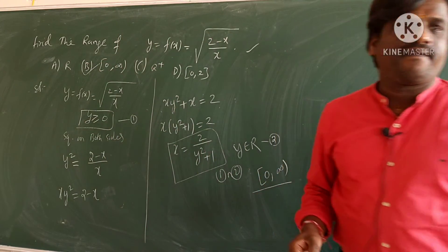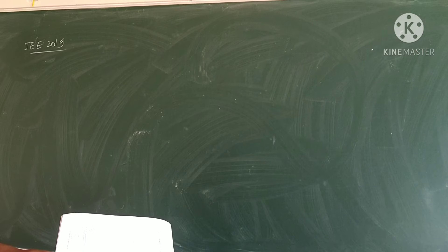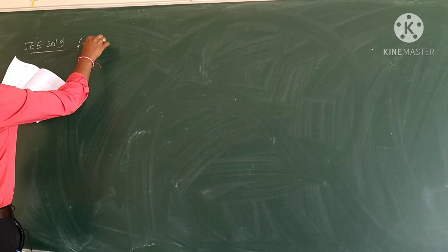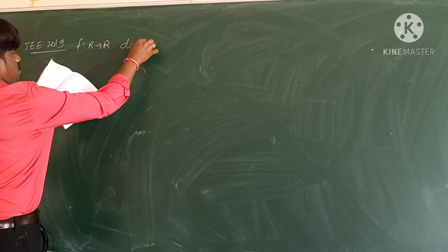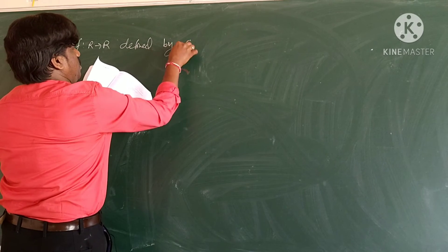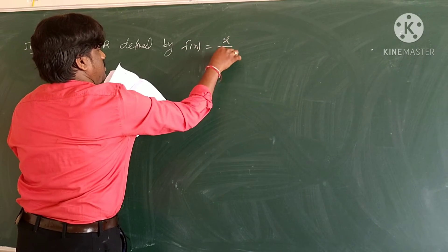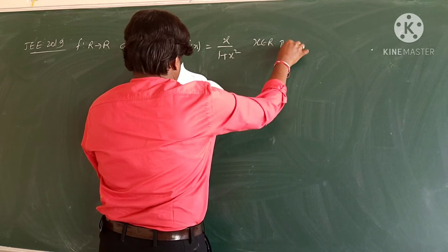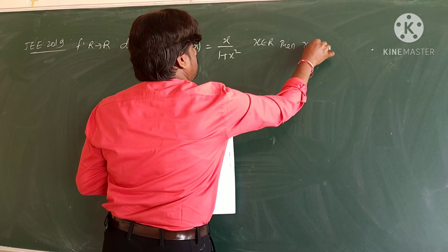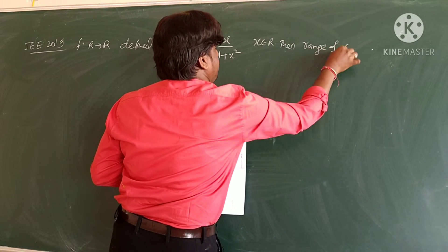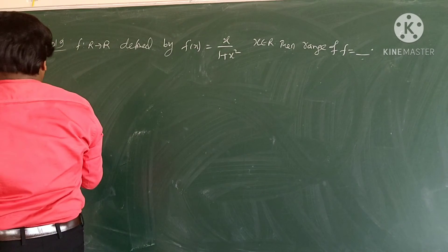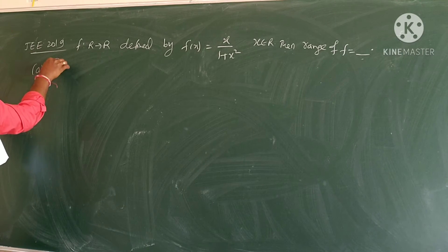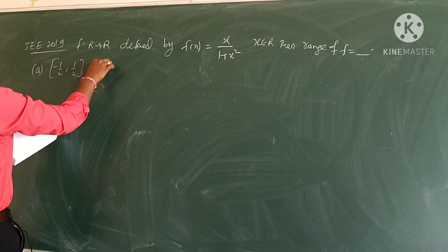The range of this function is [0, ∞), so option B is the right answer. Next is the JEE Mains 2019 question: f: ℝ → ℝ defined by f(x) = x/(1 + x²), where x ∈ ℝ. Find the range of f. This is from JEE Mains Shift 1, January 11.